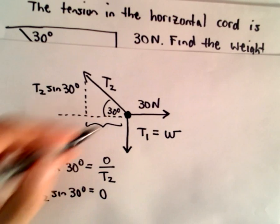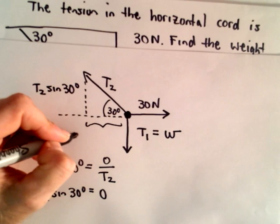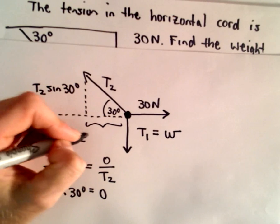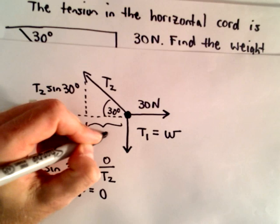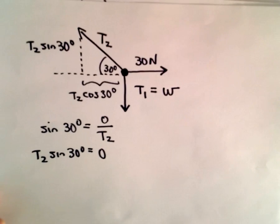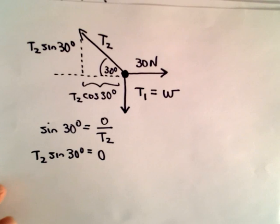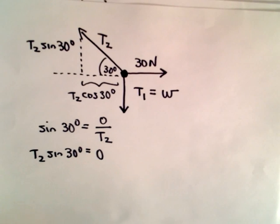And likewise, to get the horizontal component, instead of using sine, we'll use cosine. We have T2 times cosine of 30 degrees, that's going to be the horizontal component. So this is a very common thing with these equilibrium problems, breaking everything down into horizontal and vertical components. Something you'll do all the time.